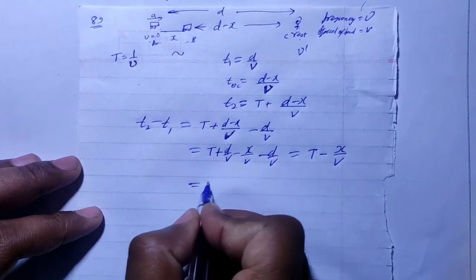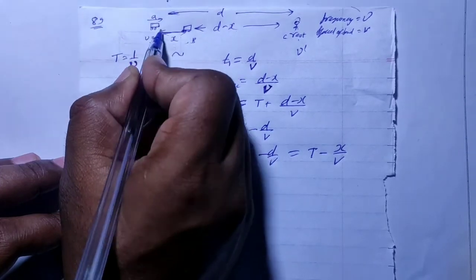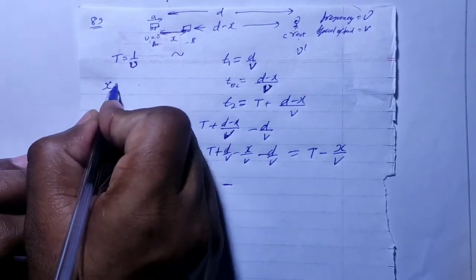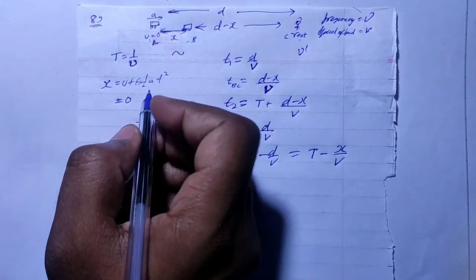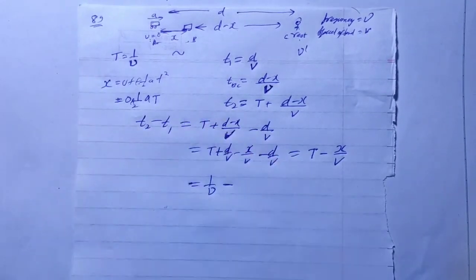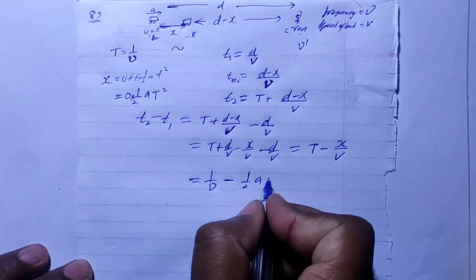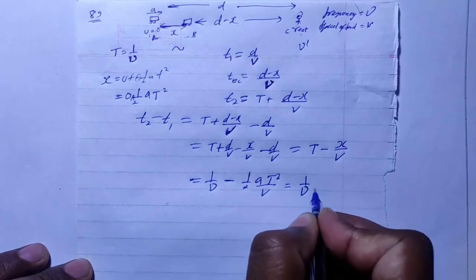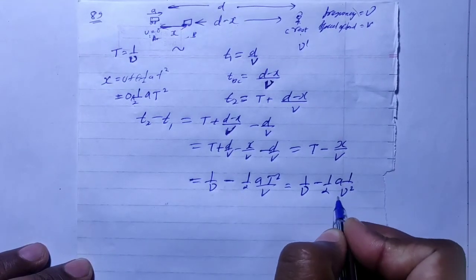Now we substitute. The time period T can be written as one over ν (frequency). The distance x traveled by the source with initial speed zero and acceleration A in time T is given by x = ½AT². Since T = 1/ν, we get x = A/(2ν²). Therefore the observed time period becomes 1/ν minus A/(2ν²·v), which equals 1/ν − A/(2ν²v).